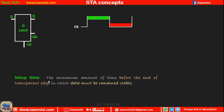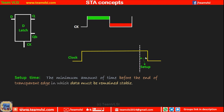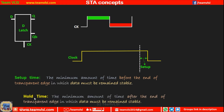Setup timing is the minimum amount of time before the end of the transparent edge — the latching edge — in which data must remain stable. If this is the clock signal, then the falling edge is the latching edge and data must be stable for some time before this latching edge. Similarly, hold time is the minimum amount of time after the end of the transparent edge in which data must remain stable.